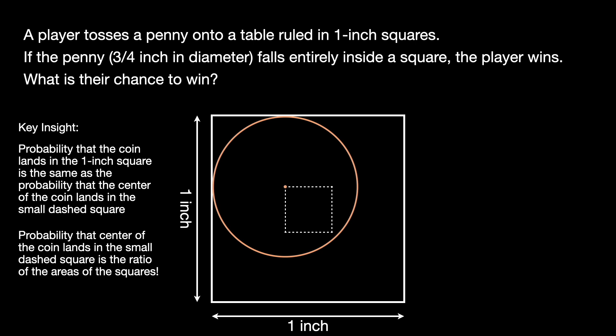We can now simply solve for the area of the small dashed square. Since we know that the diameter of the coin is 3 fourths of an inch, we know that the radius of the coin is 3 eighths of an inch. Thus, the side length of the dashed square is 1 minus 2 times the radius, giving us 1 fourth of an inch.